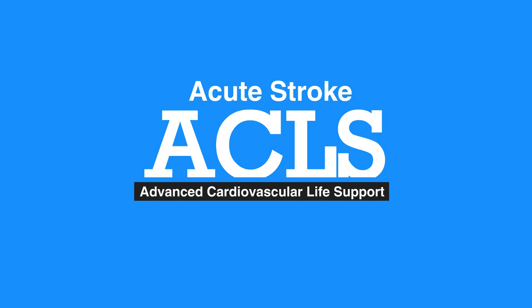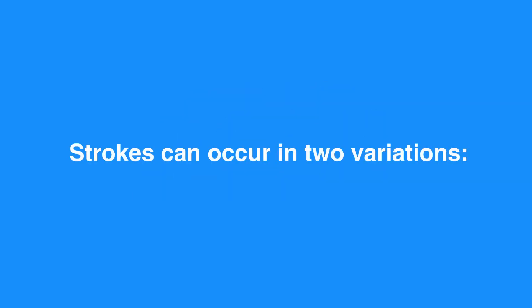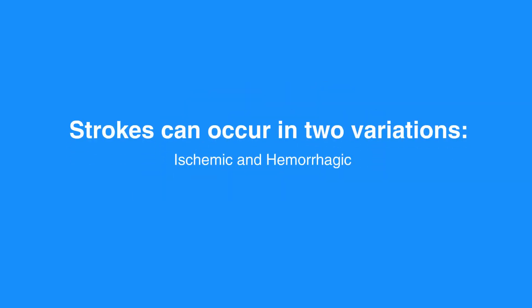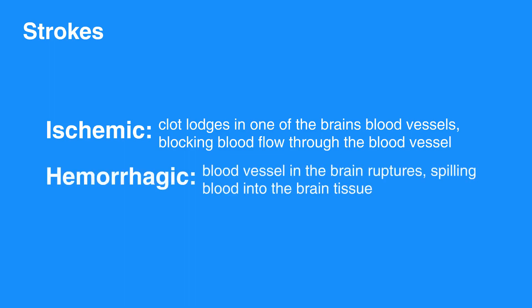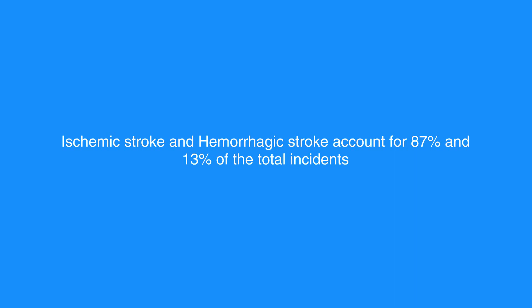Stroke is a condition in which normal blood flow to the brain is interrupted. Strokes can occur in two variations: ischemic and hemorrhagic. In ischemic stroke, a clot lodges in one of the brain's blood vessels, blocking blood flow through the blood vessel. In hemorrhagic stroke, a blood vessel in the brain ruptures, spilling blood into the brain tissue. Ischemic stroke and hemorrhagic stroke account for 87% and 13% of the total incidence, respectively.